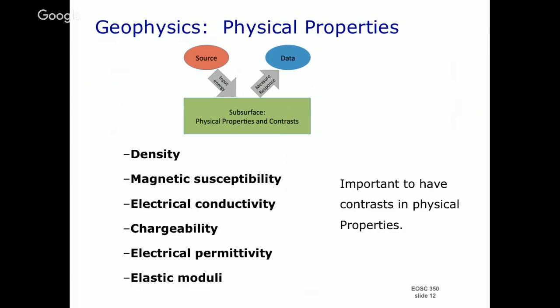How that energy interacts with the Earth depends upon the physical properties. The physical properties we're really interested in are: density — mass per volume; magnetic susceptibility — how easily something can get magnetized; electrical conductivity — how easy it is for a material to pass current; chargeability — how the material can act as a capacitor; electrical permittivity — about polarization; and elastic moduli — how elastic waves propagate.